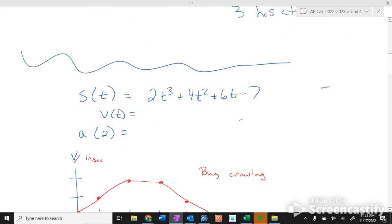If this is a position function, what would be the velocity function of that? First derivative. So it would be 6T squared plus 8T plus 6. What would be the acceleration function? Which would be 12T plus 8. What would A sub 2 be? 12 times 2 plus 8, so 24 plus 8, which is 32. That would be the velocity of it.